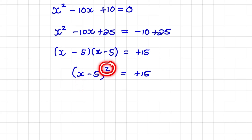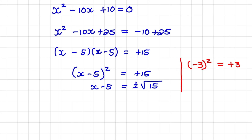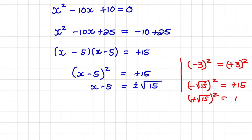Our next step is to get rid of the square. We take the square root on the left and on the right, which leads to x minus 5 is equal to the square root of 15. Notice we can have positive or negative of this square root. For example, negative 3 squared is also equal to positive 3 squared. Similarly, negative the square root of 15 squared equals positive 15, and positive the square root of 15 squared also equals positive 15. That is why we consider plus and minus when solving for x.